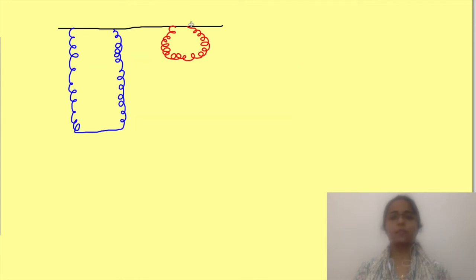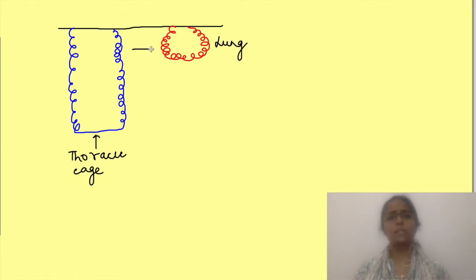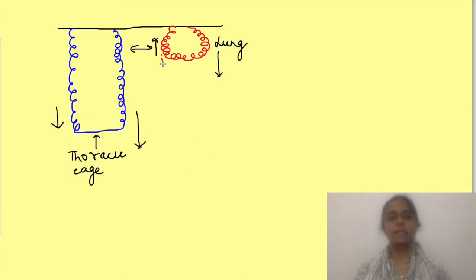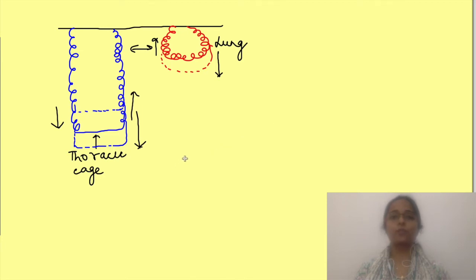We will understand this using a schematic diagram showing two springs, which are elastic structures. The blue spring represents the thoracic cage and the red one represents the lungs. When seen independently, the resting position of the lungs is collapsed while the thoracic cavity is in a much more expanded position. If any external force tries to change their position they will expand or collapse, but these elastic structures will tend to recoil to their original resting position once the force is removed.